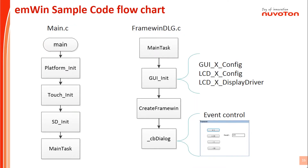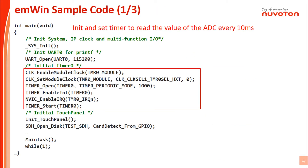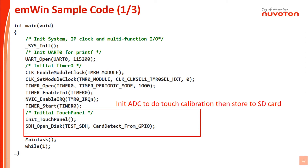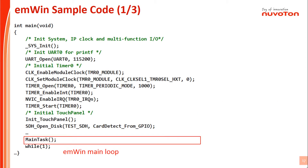This slide shows the flow chart of the EMWIN sample code. The first one is the main loop. We need to do some initialization to set the system, including platform, touch, and SD card. Then move to the main task file to do EMWIN initialization and draw a frame window created by the GUI Builder tool. You can analyze all events and control firmware flow or hardware action in the cbDialog function. Initialize and set a timer to read the value of the ADC every 10 ms. Initialize ADC to do touch calibration, then store to SD card. EMWIN main loop.